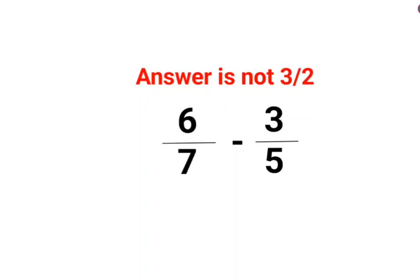Welcome everyone. So yes, a lot of people thought that the answer for this one is supposed to be 3 by 2 because 6 minus 3 is basically 3 and 7 minus 5 is 2.